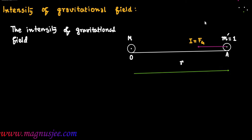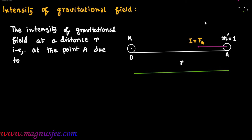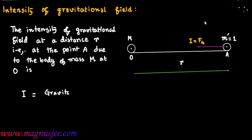The intensity of gravitational field at a distance r — that is, at point A — due to the body of mass capital M at O, is capital I. I is given by: I equals the gravitational force of attraction experienced by a unit mass.